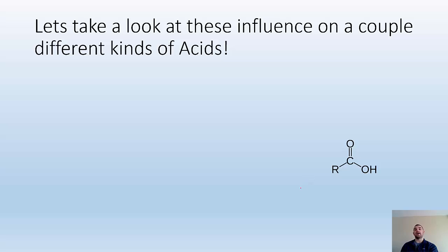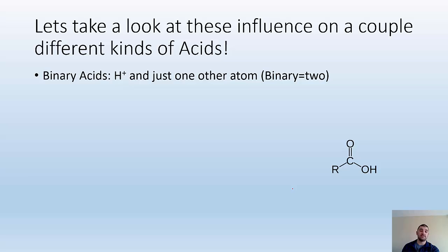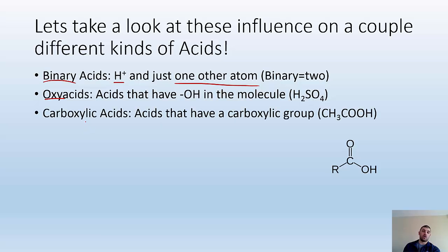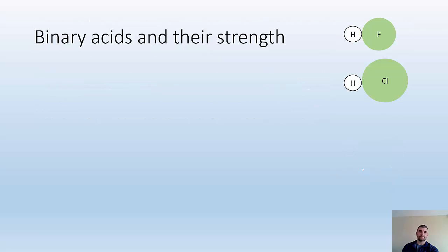Let's take a look at these influences on a couple different kinds of acids. We're going to look at binary acids, where it's just hydrogen with one other element — binary means two. We're going to look at oxy acids, which have an OH in the molecule, for example H2SO4. We're also going to look at carboxylic acids, which have a carboxylic group — a double bond O and then an OH.